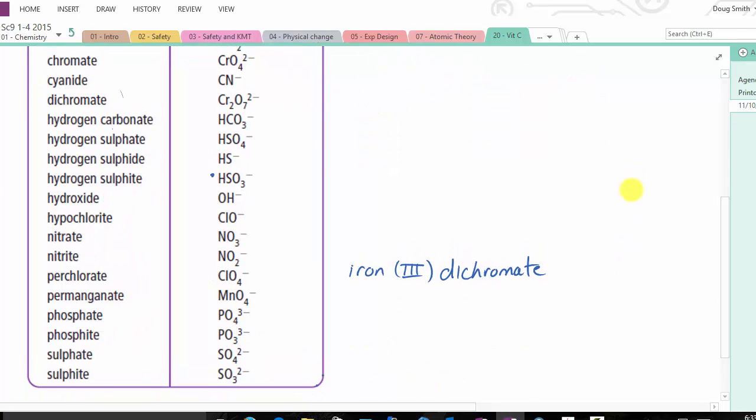There I also have another one where I'm told iron(III) dichromate. So this iron's a multivalent, but I'm told what valence I'm dealing with. So this is an Fe3+. And dichromate. So I have to go through here and find dichromate. There's dichromate. So that's Cr2O7, 2-. So this whole thing is the 2-. It sticks together.